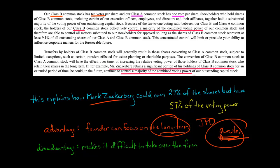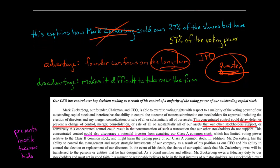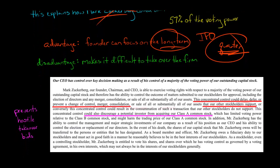The disadvantage is that if you're an investor holding Class A shares and you don't like how Zuckerberg is running the firm, there's not much you can do. This dual class structure is essentially an anti-takeover provision. Facebook's own filings note that this concentrated control could prevent a merger or consolidation that other stockholders support. So even if a majority of Facebook shareholders wanted a merger, Zuckerberg — holding the majority of voting power despite owning a minority of shares — could block the deal.